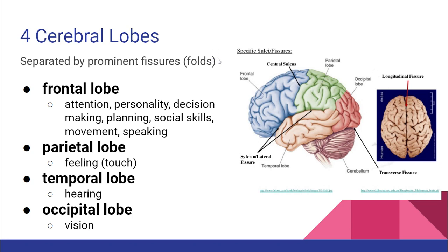For the biggest ideas: the frontal lobe creates our personality, handles movement via the motor cortex, and is involved in speaking, problem-solving, and analytical thought. The parietal lobe contains the somatosensory cortex — our feeling center — where sensory neurons connect. The occipital lobe in the back is our visual cortex where vision is processed. The temporal lobe on the side, closest to our ears, contains our auditory cortex where we process sound.